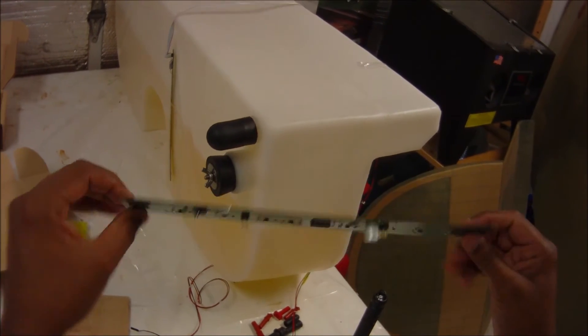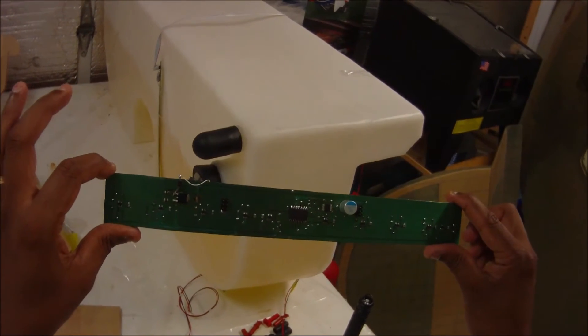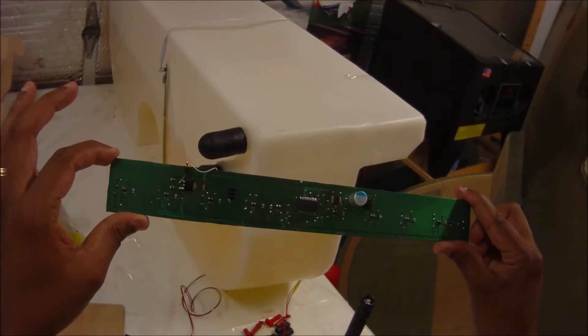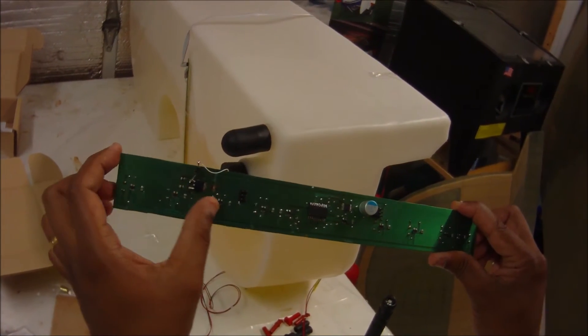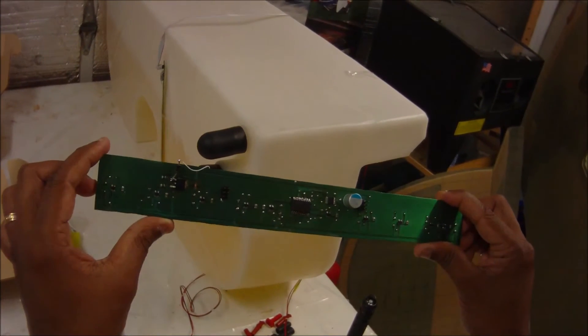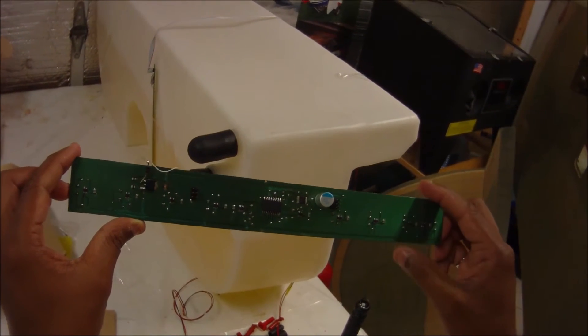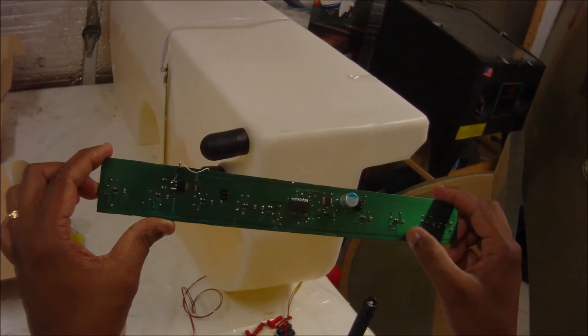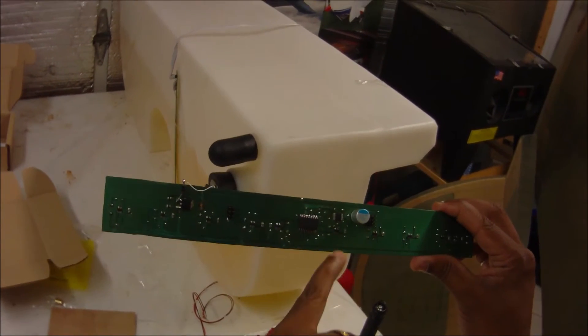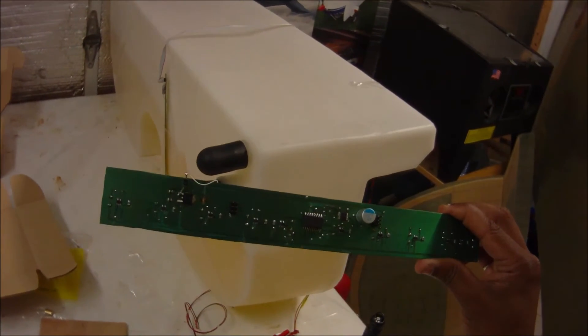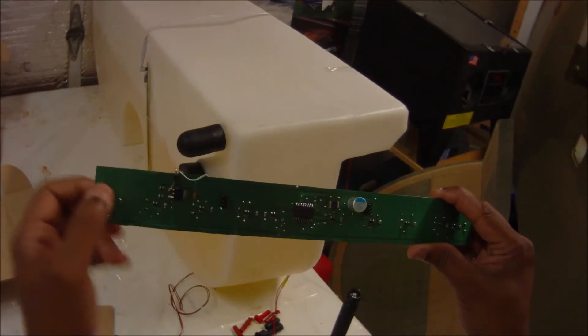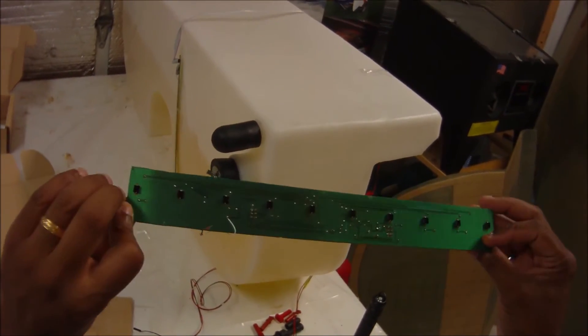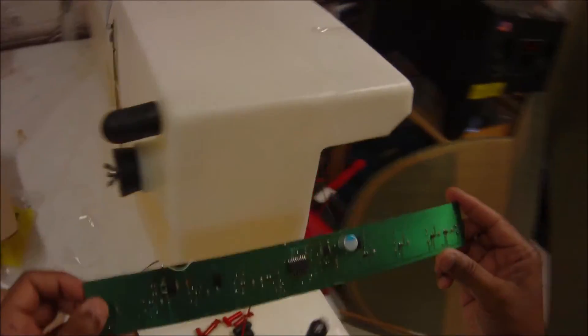So there's the board. Again, this is a homemade board using the laser printed toner transfer method. And this green stuff you see is the solder mask using a product called DynaMask 5000. It helps with the surface mount components. Without the solder mask, soldering the surface mounts is difficult. So let's hook it up and see what it does.